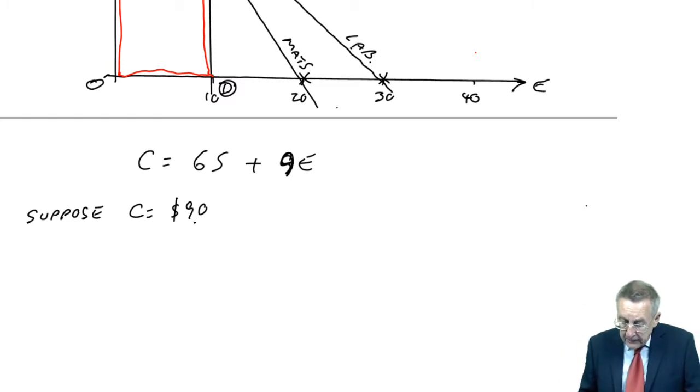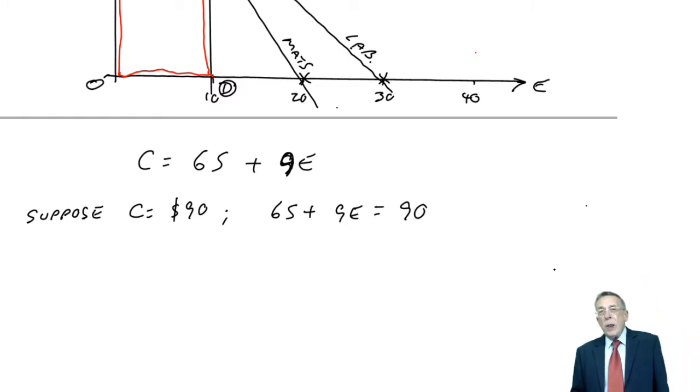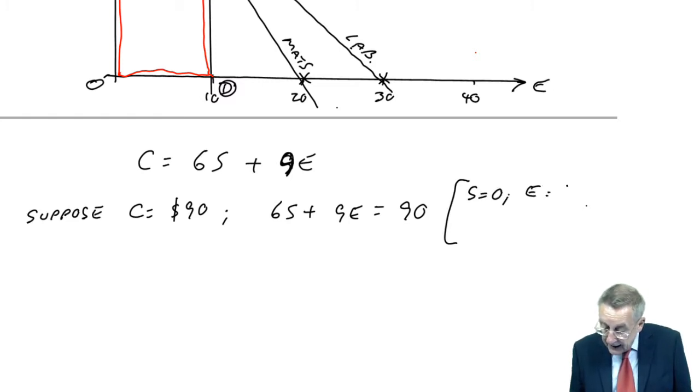What would that mean? It would mean that 6S plus 9E was equal to 90. And let me draw it on the graph like I did the constraints. Two points fix a line. So if S equals 0, E, 9E is 90, equals 10. If E equals 0, S, 90 over 6, is 15.